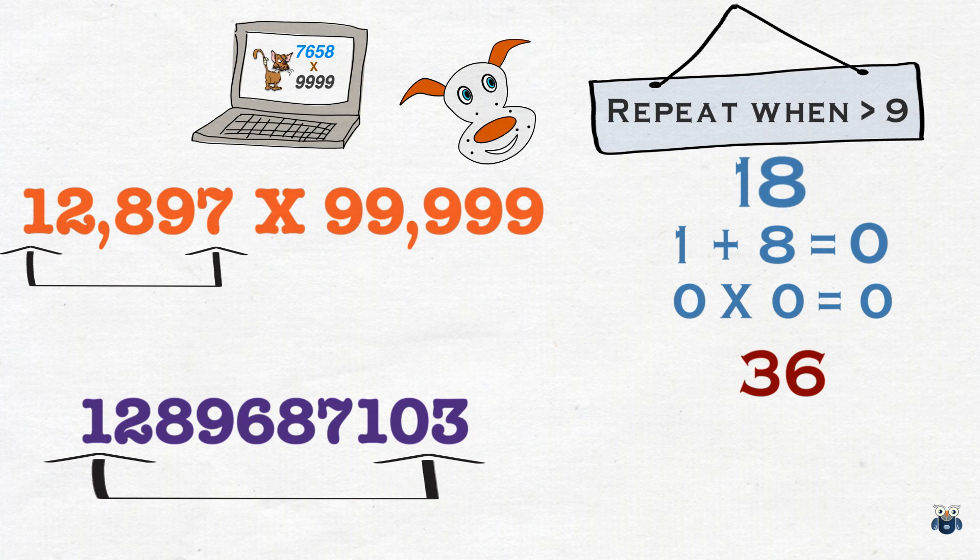Now, 36 is bigger than 9. So, we add the digits. 3 plus 6 is 9. And hey, we ignore 9s. So, we get a big 0. This is the second check result.